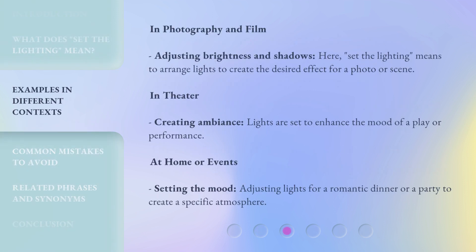In photography and film, 'set the lighting' means adjusting brightness and shadows — arranging lights to create the desired effect for a photo or scene. In theater, it means creating ambiance, where lights are set to enhance the mood of a play or performance. At home or events, it means setting the mood — adjusting lights for a romantic dinner or a party to create a specific atmosphere.